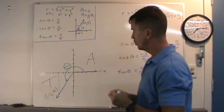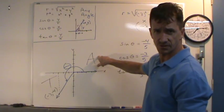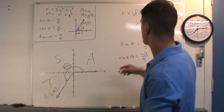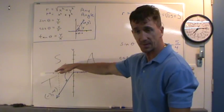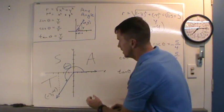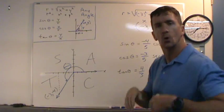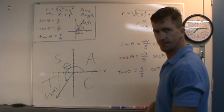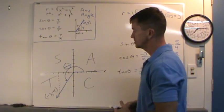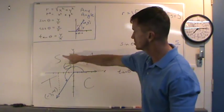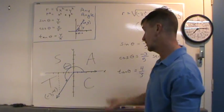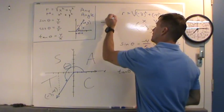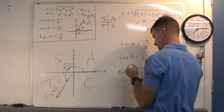If the terminal side lies in quadrant 1, all trig functions are positive. If it lies in quadrant 2, only sine and its reciprocal buddy cosecant are positive — the others are negative. We just saw quadrant 3. In quadrant 4, cosine of theta is positive, and its reciprocal buddy secant. A good phrase to help you remember this is: All Students Take College Algebra — or All Students Take Calculus. A-S-T-C for all the quads. Make sure you know this.